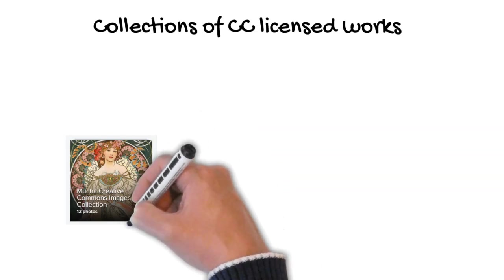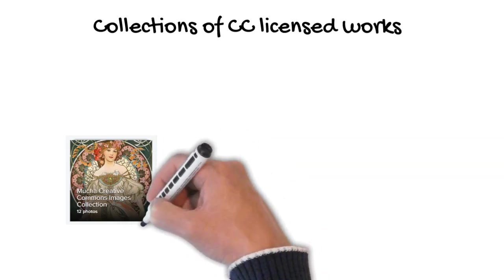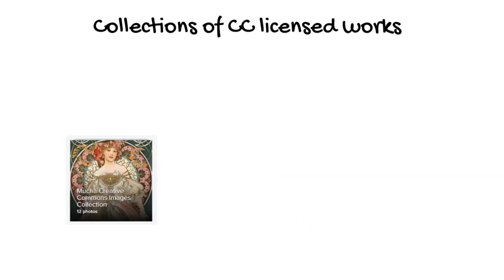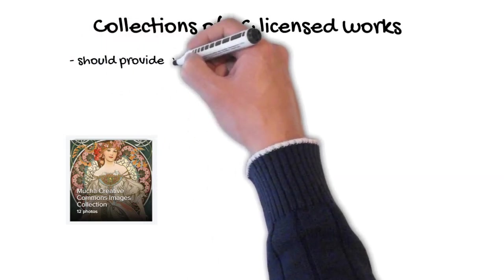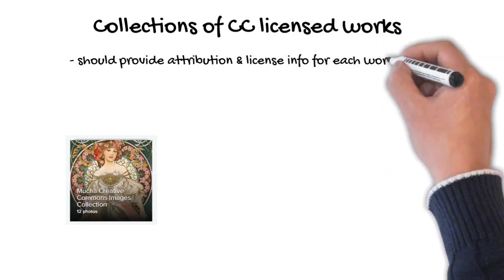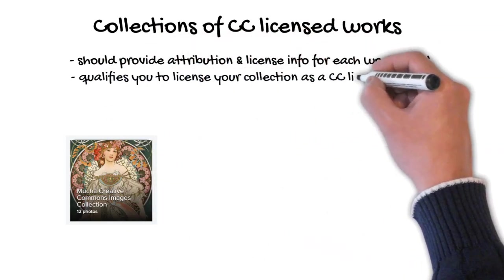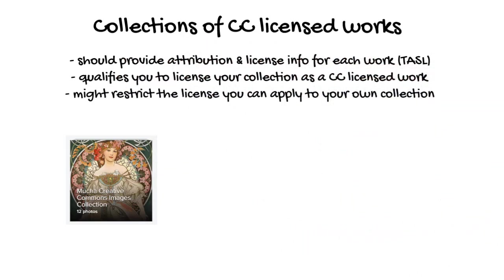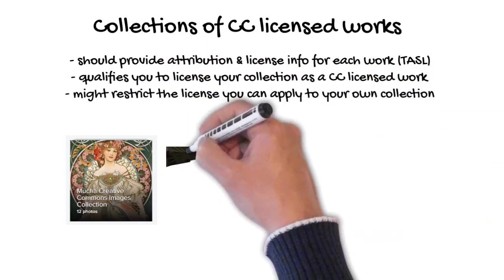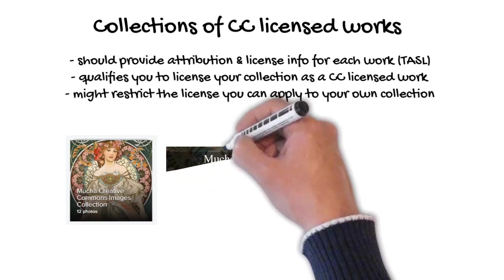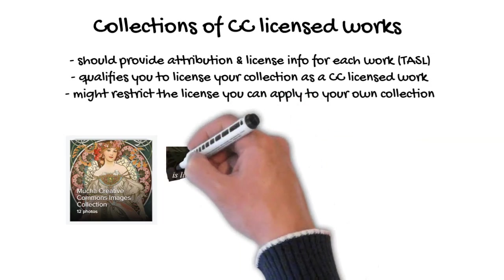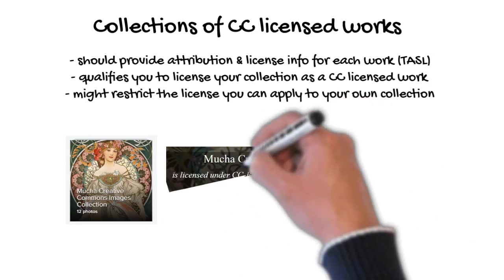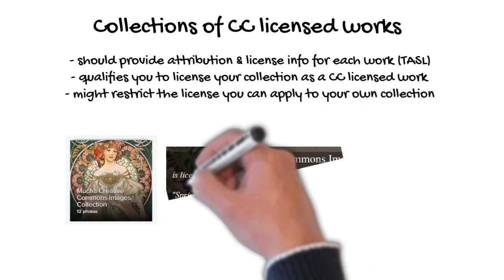When you license your collection, a good guideline is to use a license that mirrors the most restrictive license in your collection. For instance, if you include a CC NC work in your collection, use CC NC as the license for the entire collection. Or if you want, you could create different collections based on their license — for instance, a collection of CC BY works licensed under CC BY, and a separate collection of CC NC licensed works under a CC NC license.